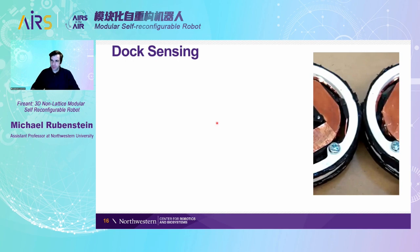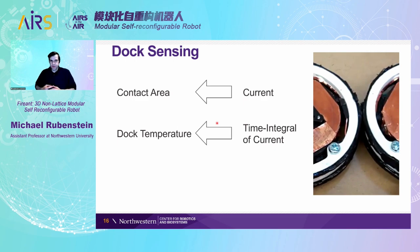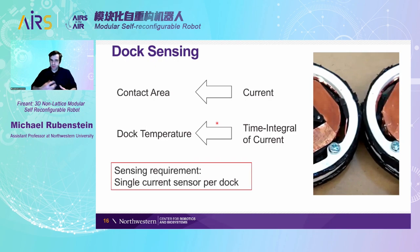If we want the robots to attach to each other, we need to sense that they're attaching in order to control them. Two things we care about are the contact area between the two wheels, and how hot the dock gets to ensure it's hot enough to melt. To indirectly measure contact area, we look at the amount of current flowing through the two wheels — more current is a proxy for a larger area of contact. To approximate dock temperature, we look at the time integral of the current. Assuming it heats up quickly enough, this is a good proxy for how hot the docks are. So all we need is a current sensor to sense contact as well as a successful docking.